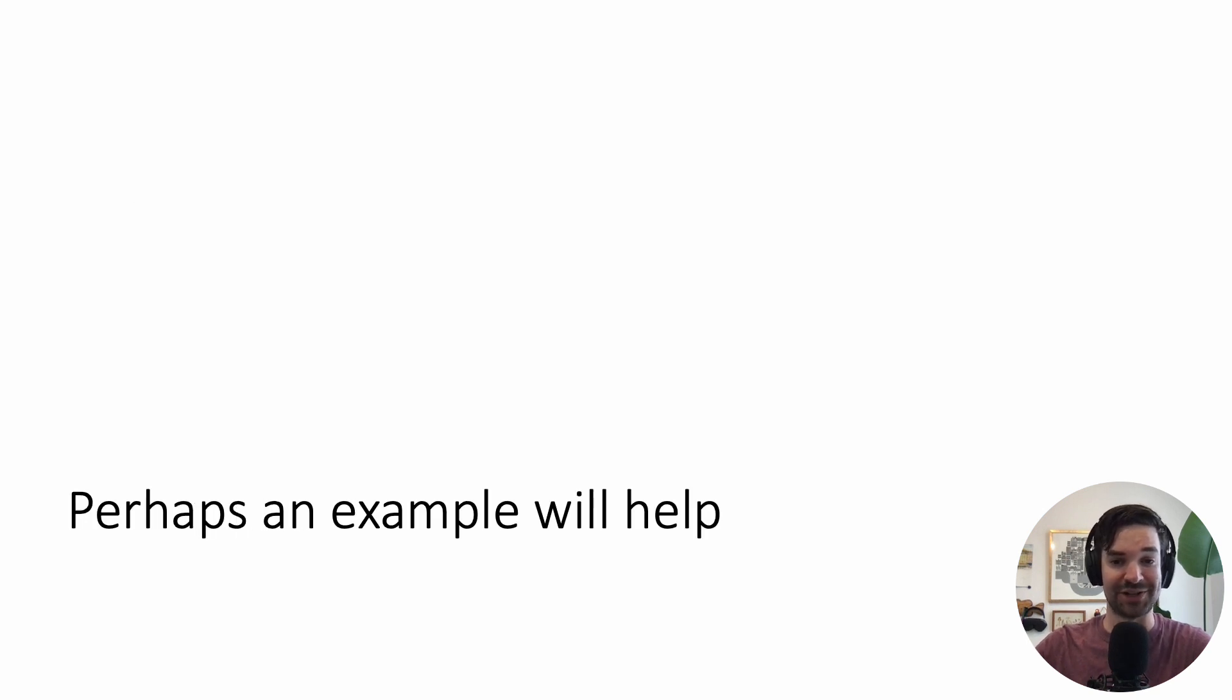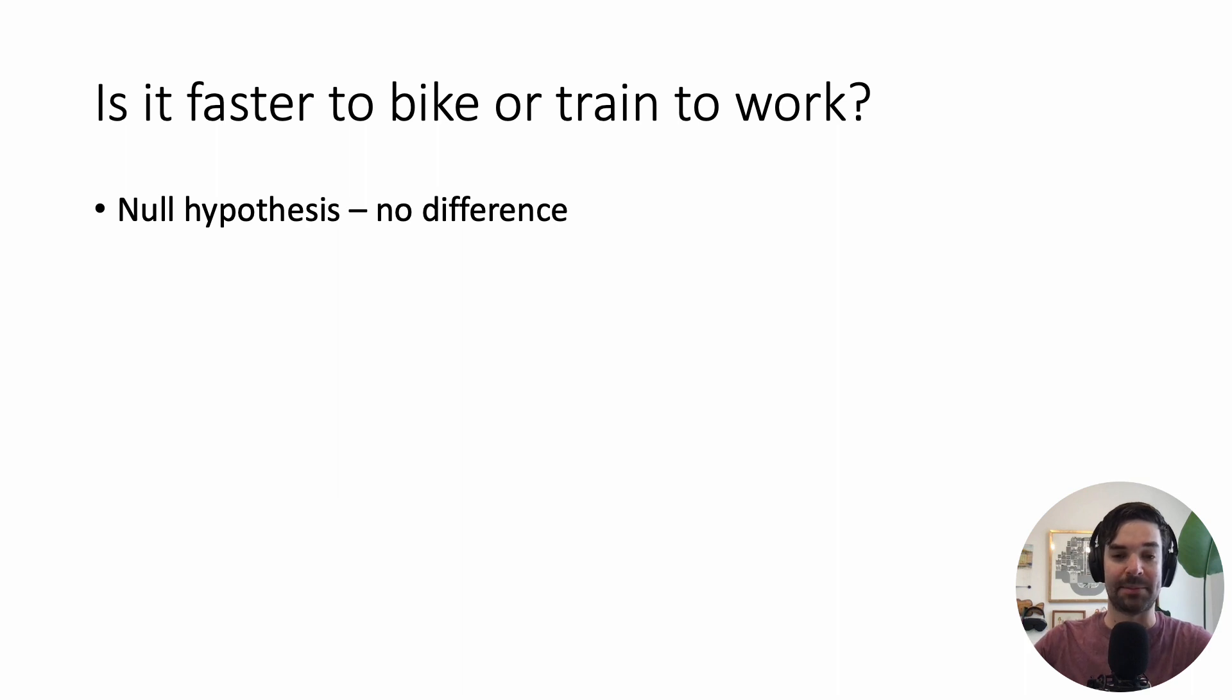Maybe this is still very confusing, so let's bring it to life with a simple example. This is an example from Nijim Evidence. I'll include a link in the show notes below. So you could ask the question, is it faster if I bike to work or take the train to work? So our null hypothesis is that there's no difference.